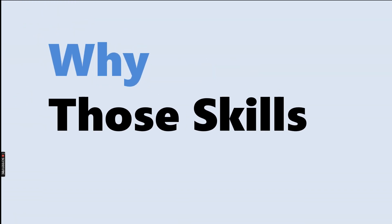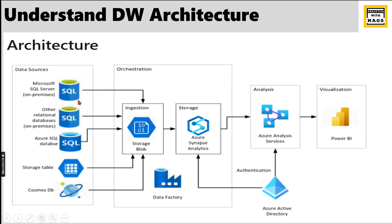Now let's understand why those skills are required. I mentioned different skills for each role — but why? To understand the role each skill plays, we need to understand the entire architecture of a data warehouse. We have data in different sources with different varieties. We can't generate reports directly on top of those source systems, so we need a common place to bring all the data — that job is done by Data Factory or any ETL tool. You store the data somewhere, then do the modeling and reporting. That's the typical architecture.